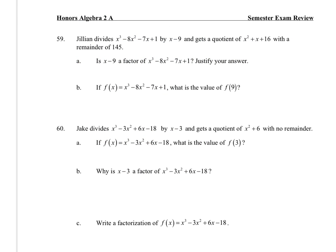Jillian divides that polynomial by x - 9 and gets a quotient with a remainder. Is x - 9 a factor? No. Because there is a remainder that is not 0. What is the value of f(9)? Because the remainder was 145, the value is 145.